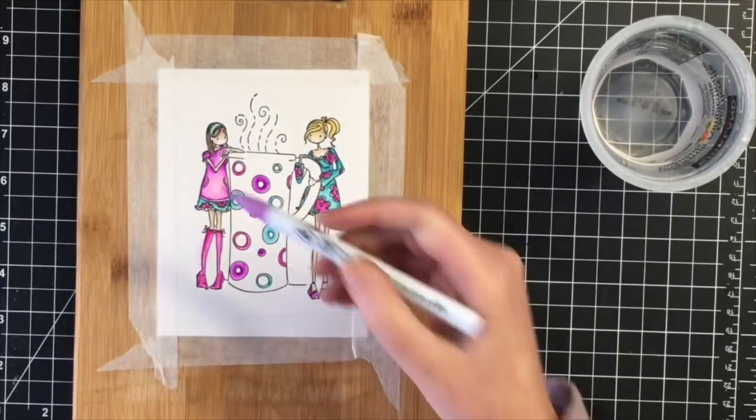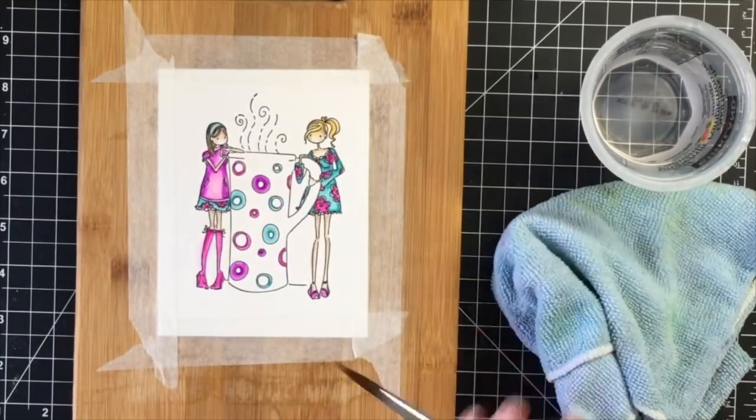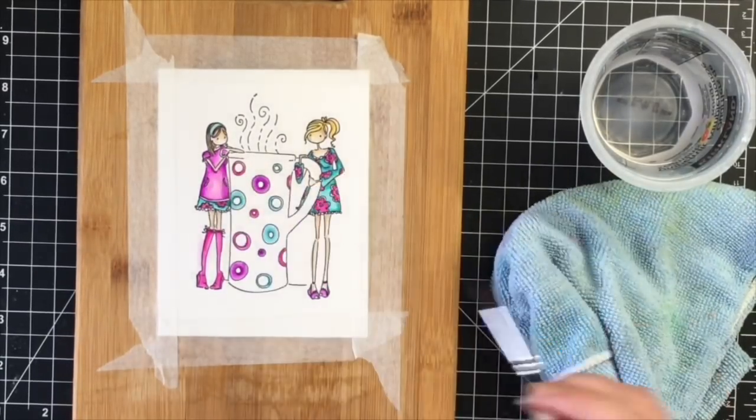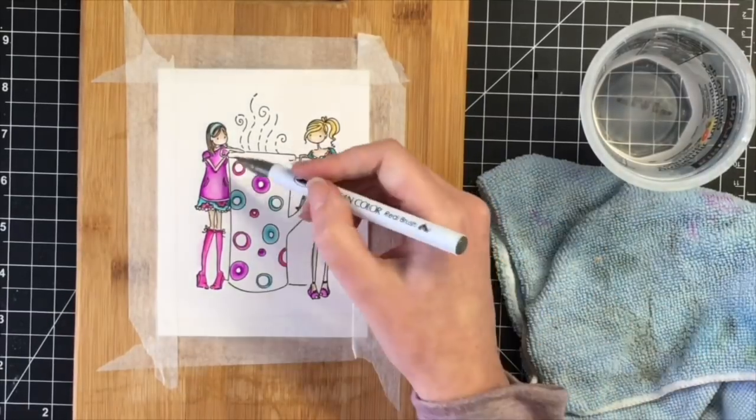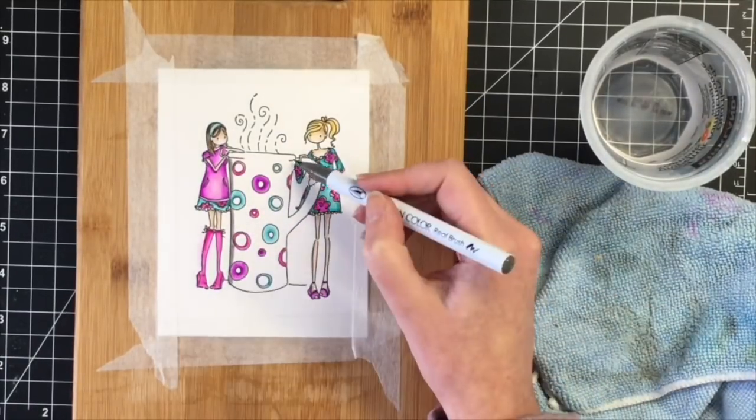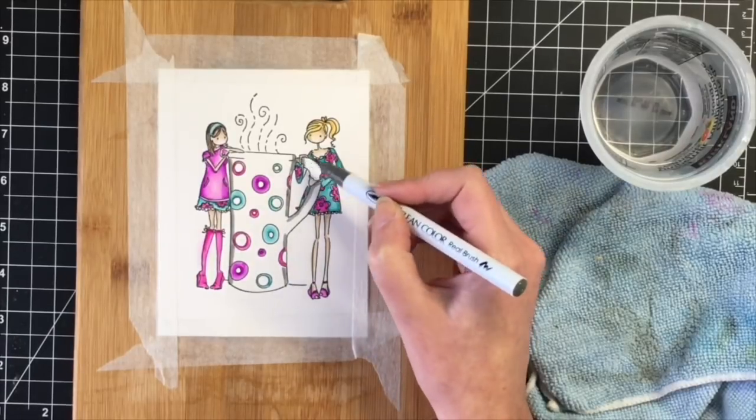For the purple on her dress, I do go over that a couple times. I found that I used too much water the first time. So in order to bring in more of the color, I wait till it dries a little bit and then add another coat.